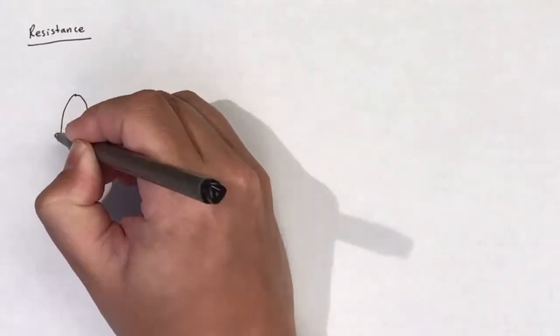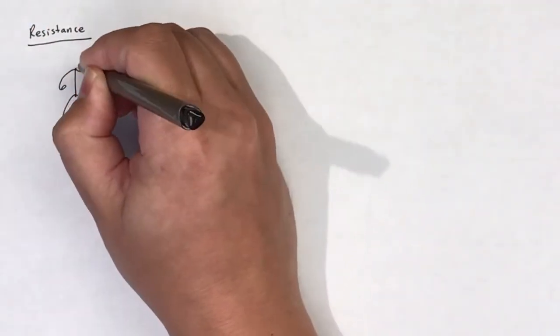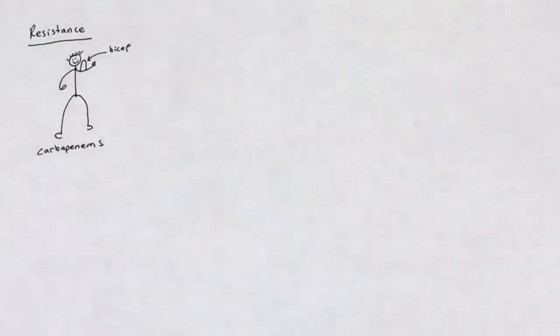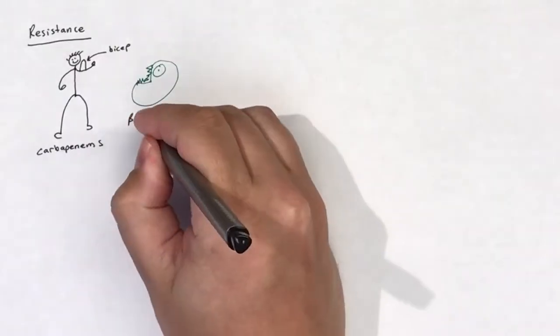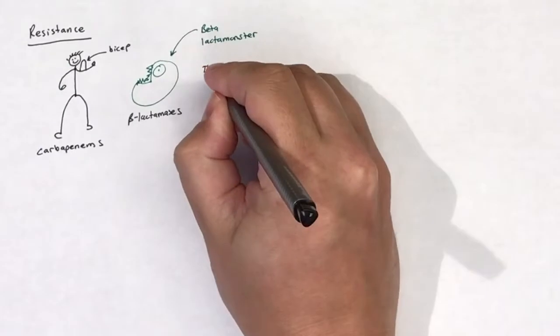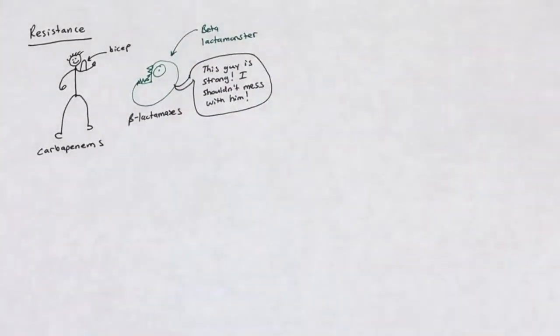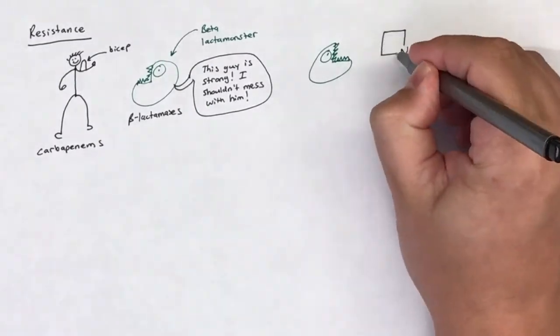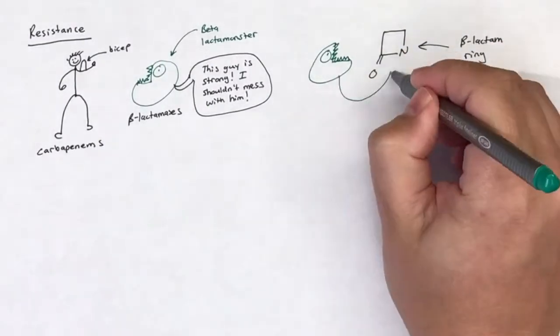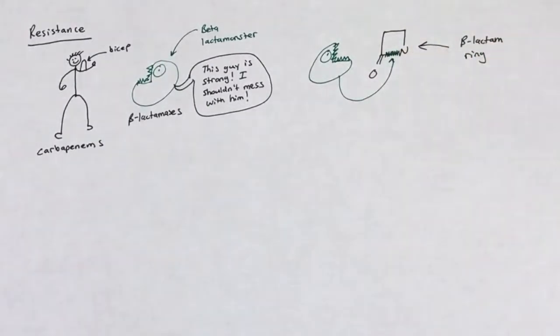Carbapenems tend to be relatively resistant to degradation by beta-lactamases, including extended-spectrum beta-lactamases. Beta-lactamases are a family of enzymes that bacteria can express that degrade the beta-lactam ring, rendering the antibiotic inactive. This is a common mechanism of resistance with the penicillins and cephalosporins.